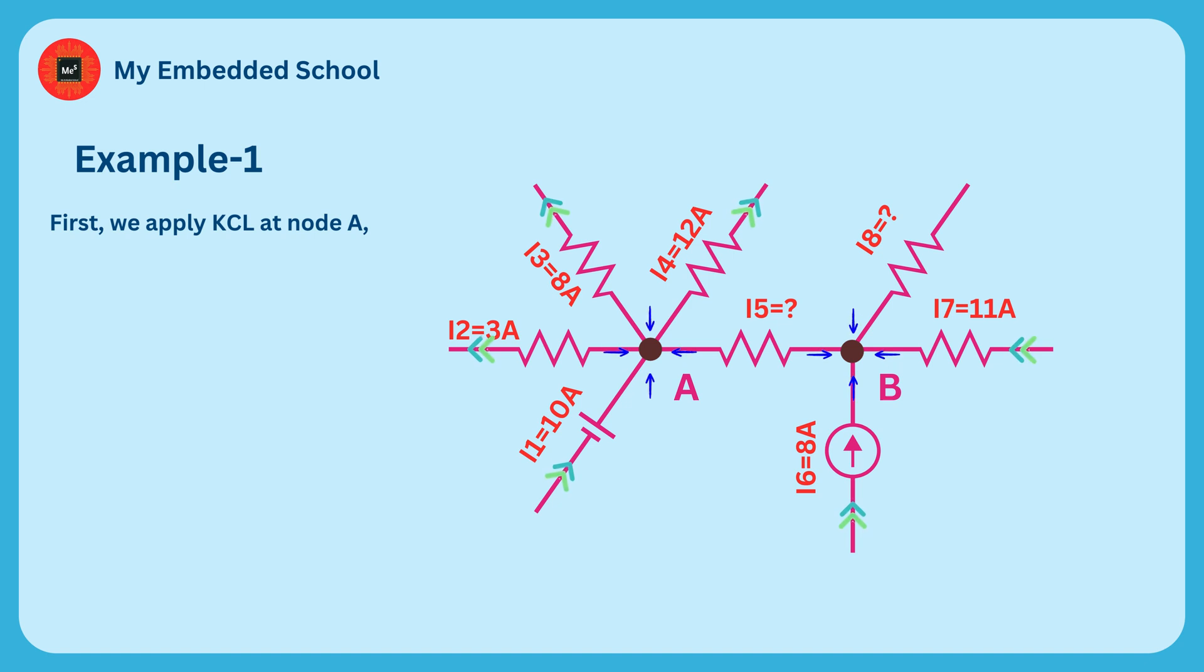We don't know the direction of the current I5, so we assume the direction of the current I5 is leaving the node. So we can write the equation this way: the sum of all currents entering the node is equal to the sum of all currents leaving the node. I1 is equal to I2 plus I3 plus I4 plus I5.